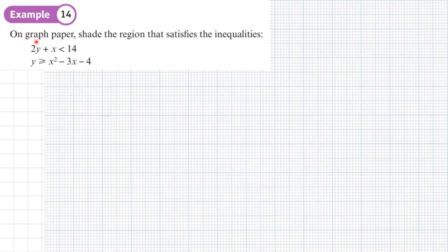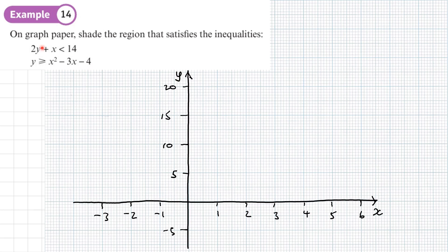Example 14: on graph paper, shade the region that satisfies the inequalities 2y + x < 14 and y ≥ x² - 3x - 4. Let's start with a grid and begin with 2y + x = 14, which is going to be a dotted line.